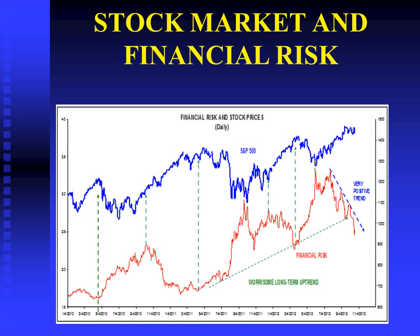This is a very important indicator that we have developed and we call it financial risk. It is a proprietary indicator developed by analyzing many financial data. When financial risk declines, the odds are the market is going up. The time to worry is when financial risk rises, because then the economy is going to slow down, profits are going to suffer, and the stock market is weak. Here financial risk was rising, but then started going down and the market responded accordingly. Here financial risk went down and the market went up. This is an important indicator that we follow in each issue of the PeterDak portfolio.